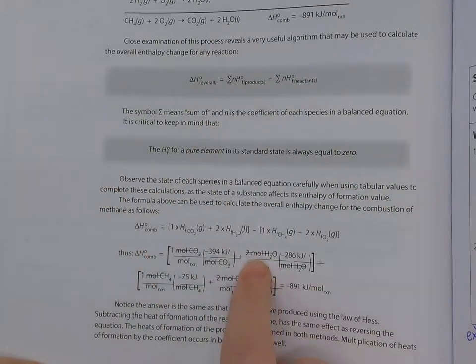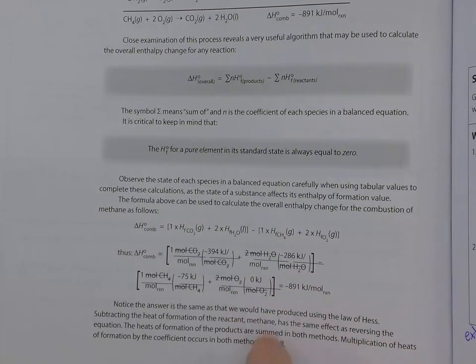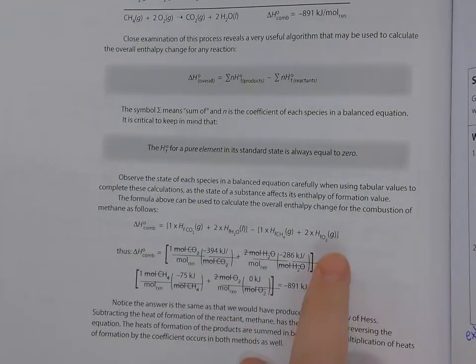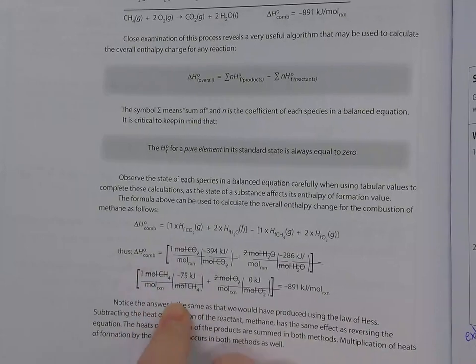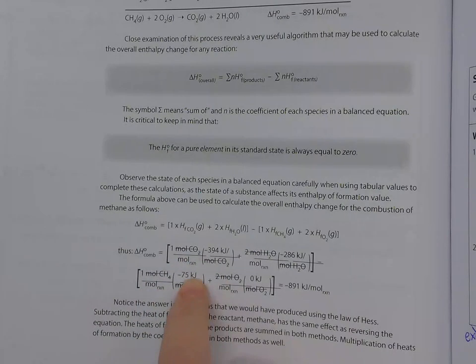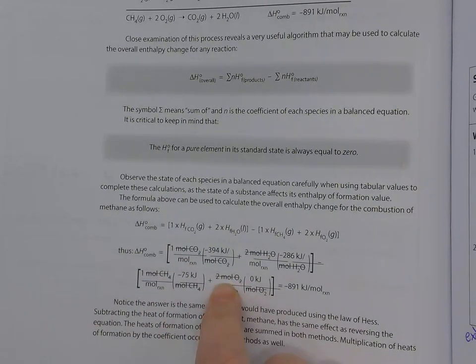Water, we've got a coefficient of two. So two moles of water times its kilojoules per mole. So that's our product. And then we're going to subtract our reactants. So we've got one mole of CH4. Its value is negative 75 kilojoules per mole. And we've got two moles of oxygen.